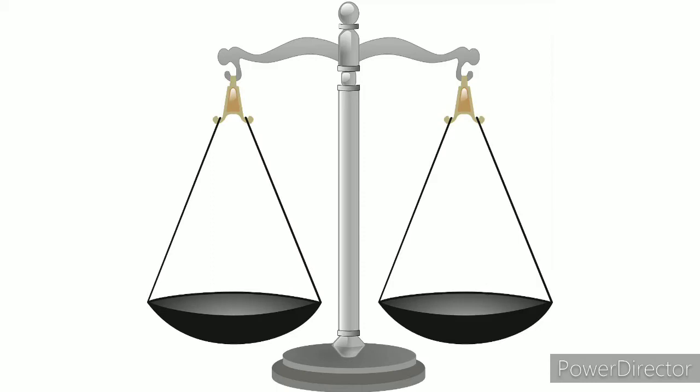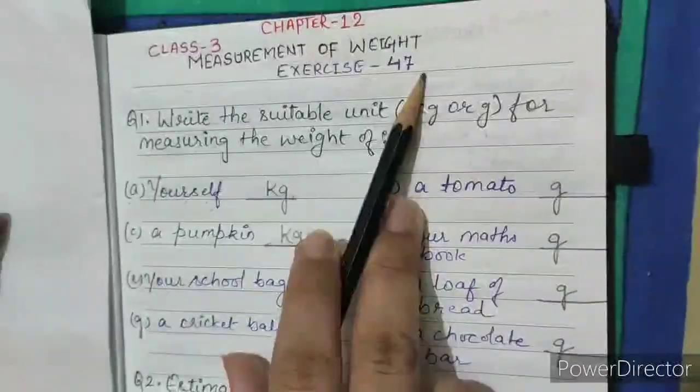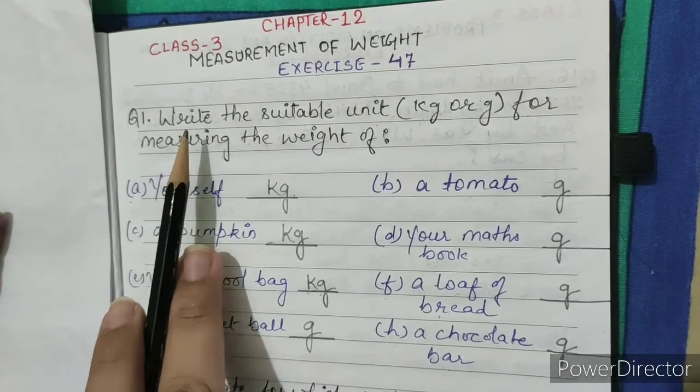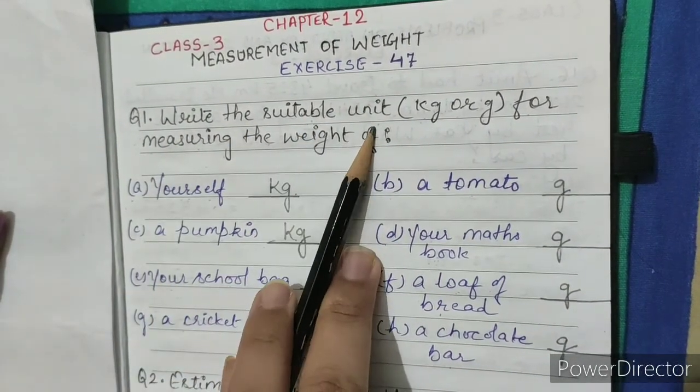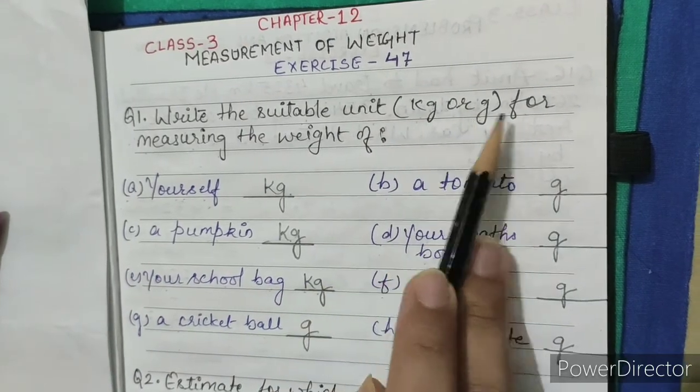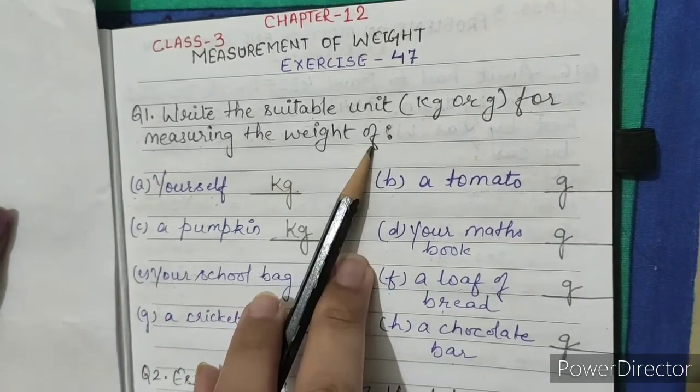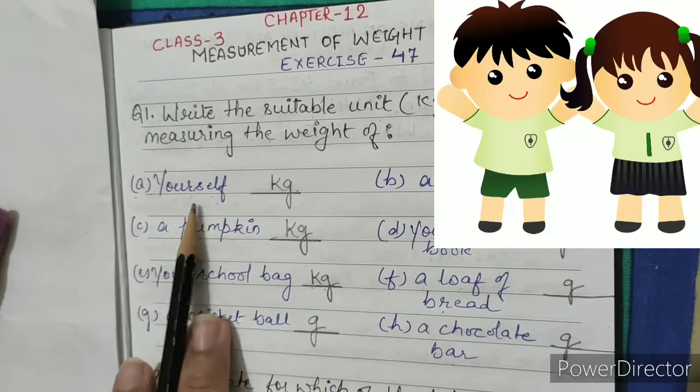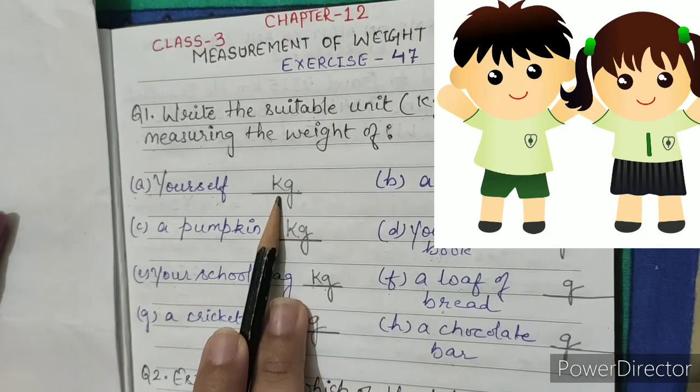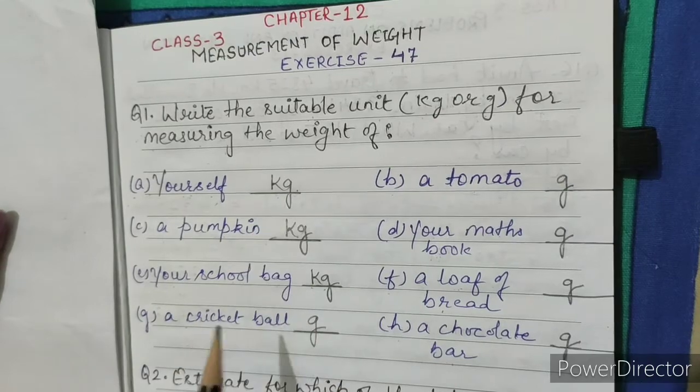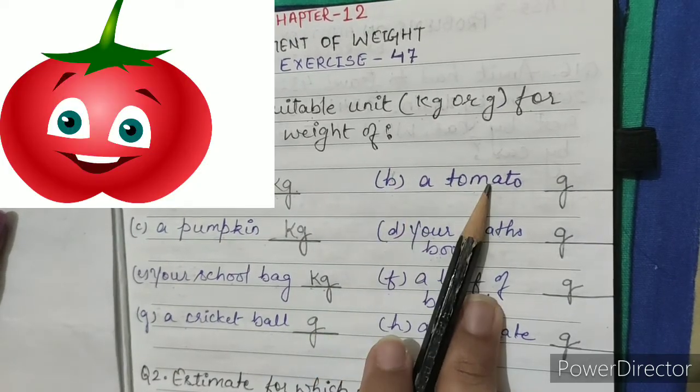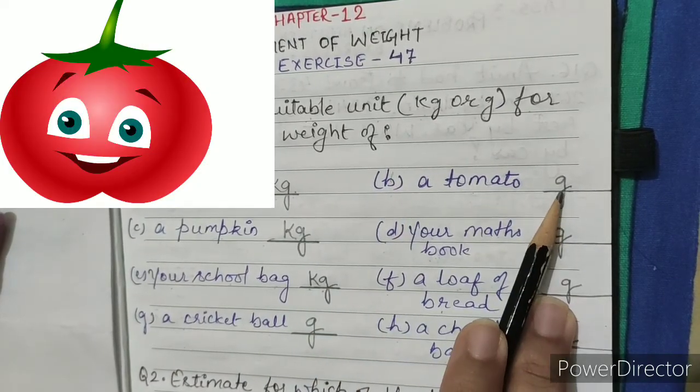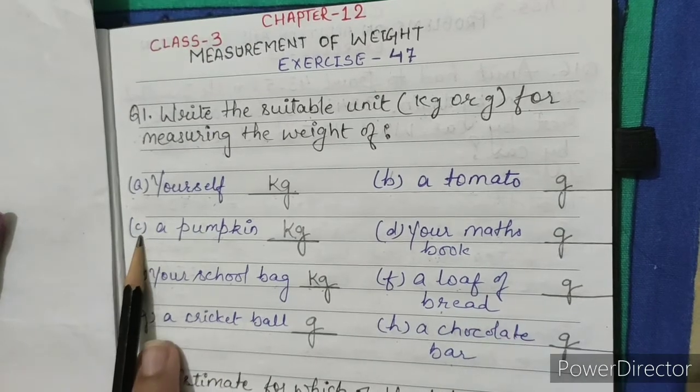Let's start with exercise 47, question number 1. Write the suitable unit kg or g for measuring the weight of: A. Yourself - unit is kg. B. A tomato - unit is g.